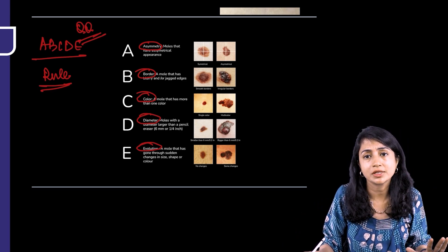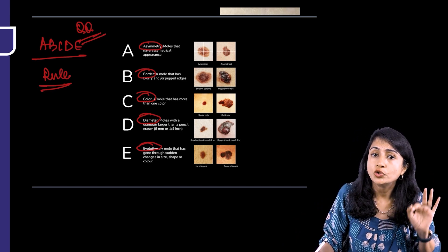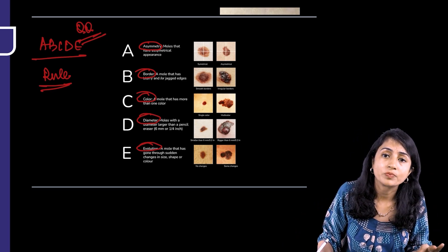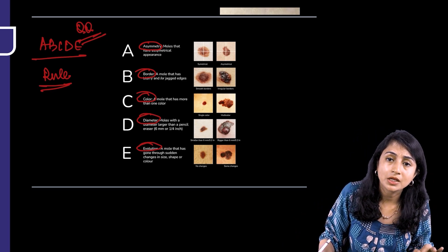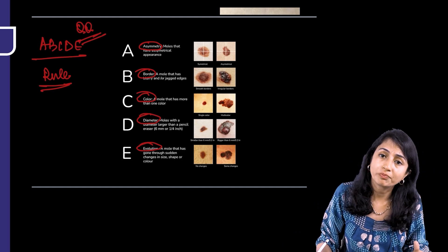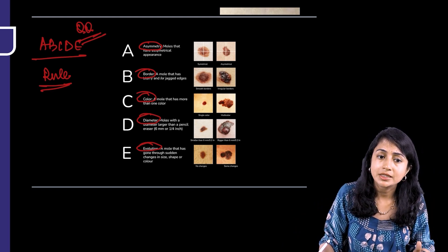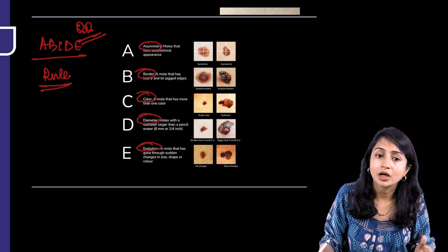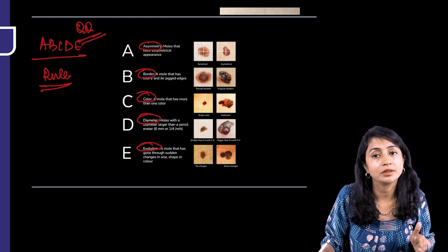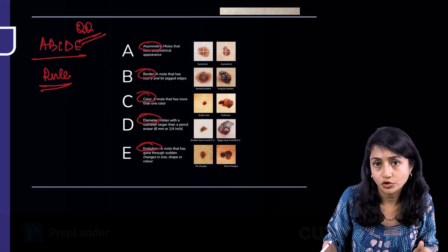If any of these 5 features are present, you do a biopsy keeping a suspicion of malignant melanoma. To summarize: Asymmetry, Border, Color, Diameter, and Evolution.